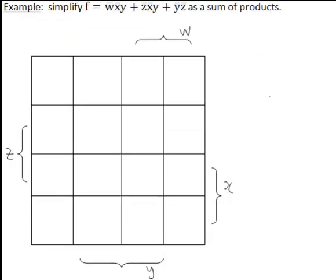And there are four variables in this expression, w, x, y, z. So here is an example of how we could set up a Karnaugh map with those four variables in it.